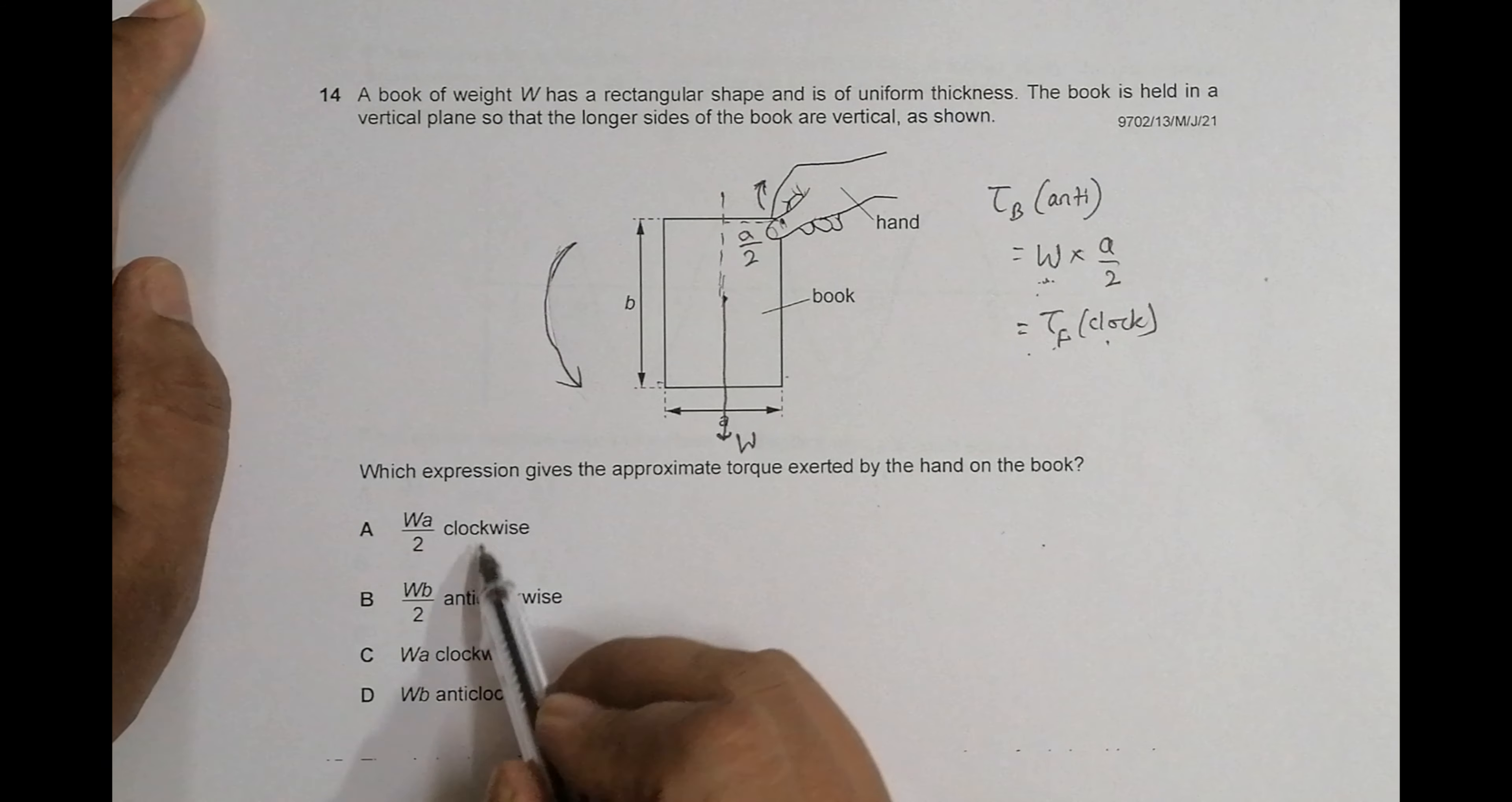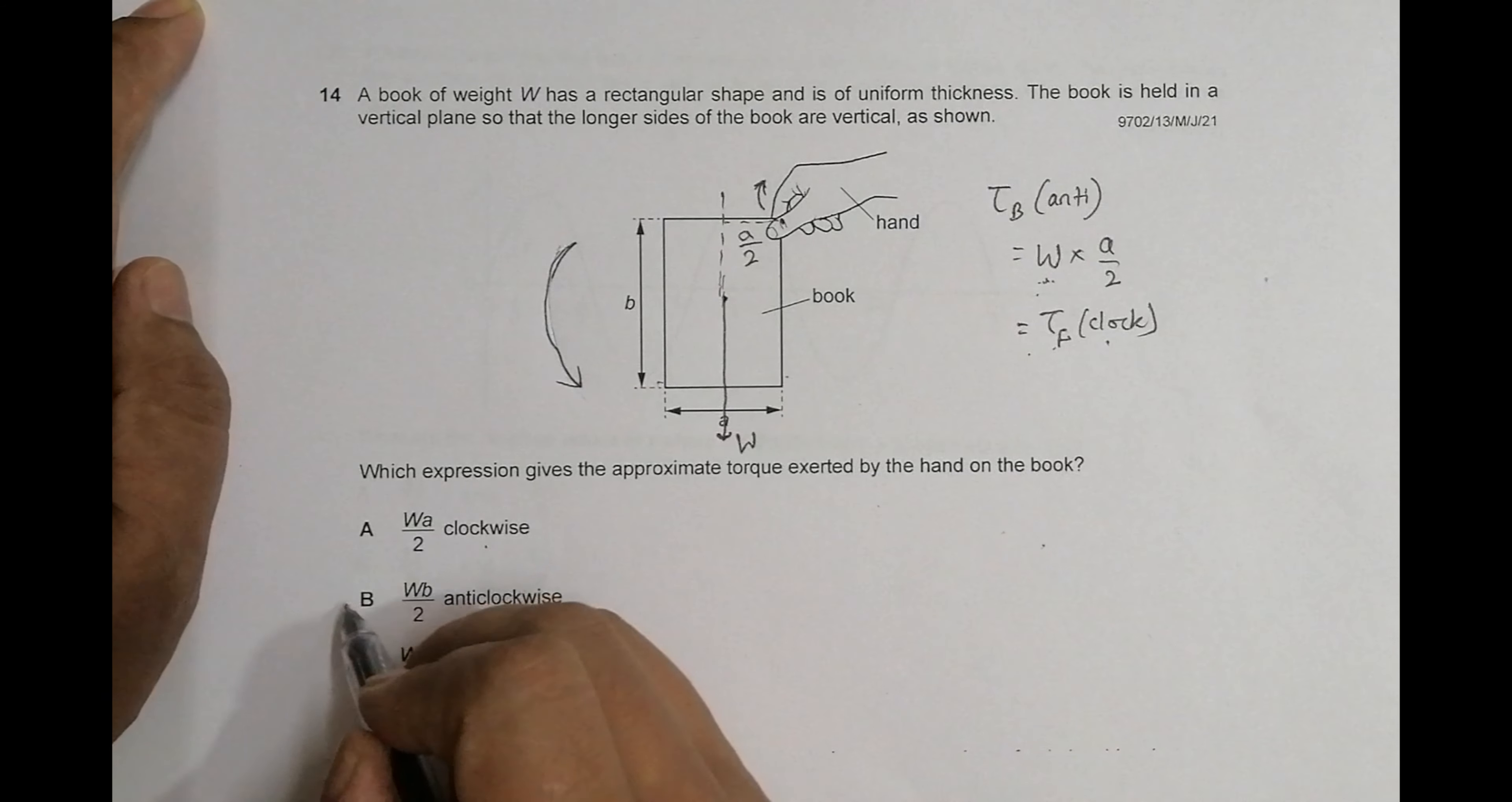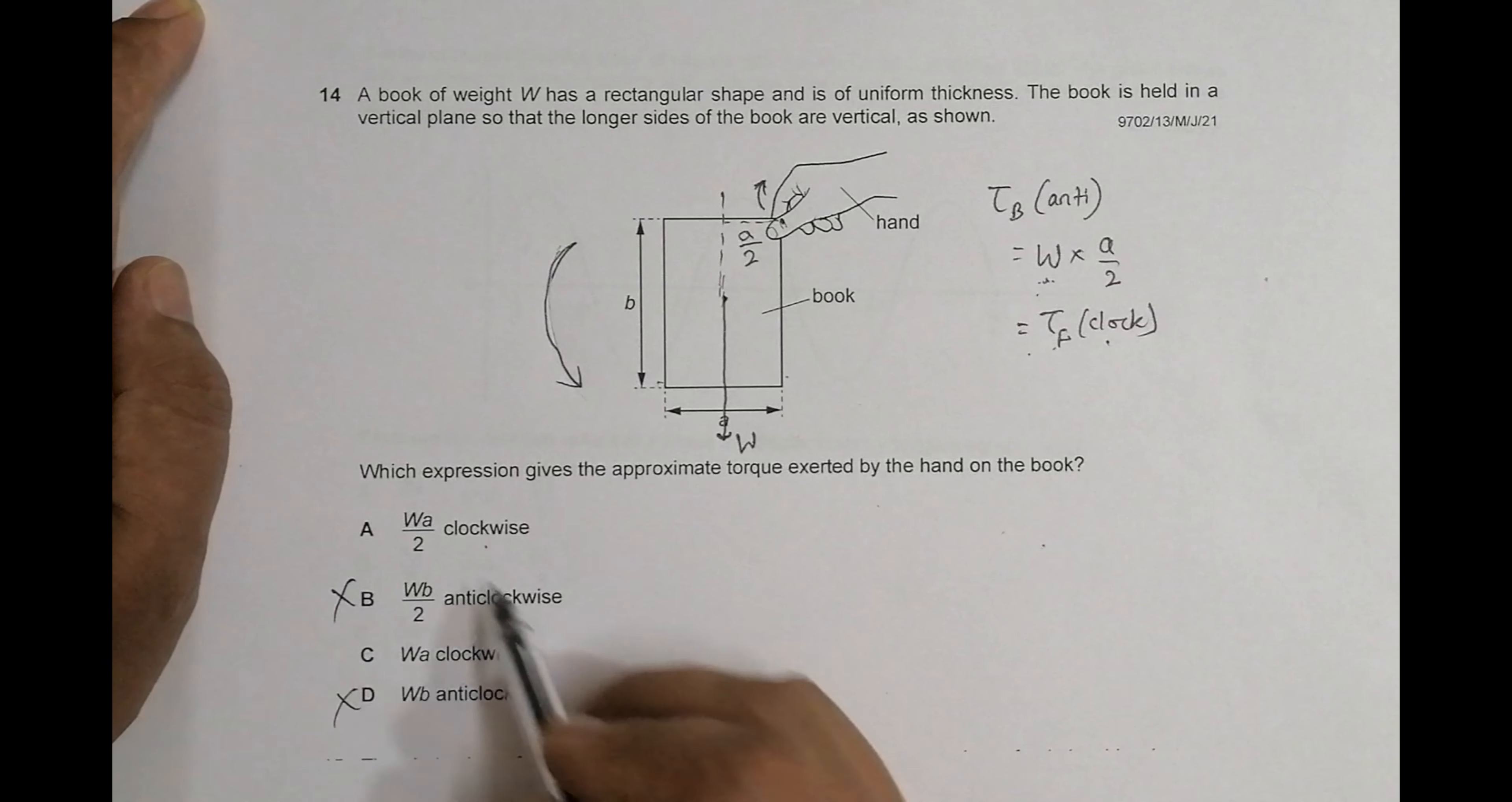These two disqualify because they're clockwise. W a by 2, so this disqualifies and this thing disqualifies. So choice A should be the correct choice.